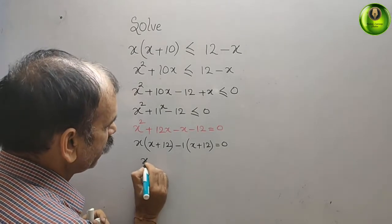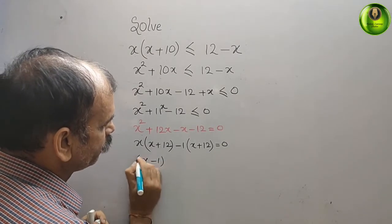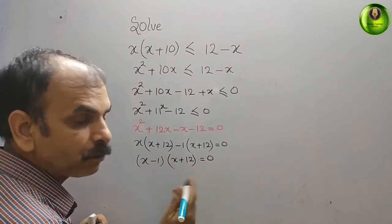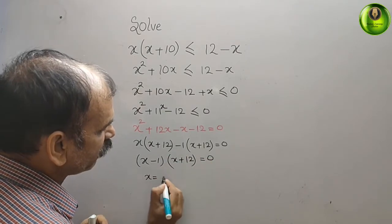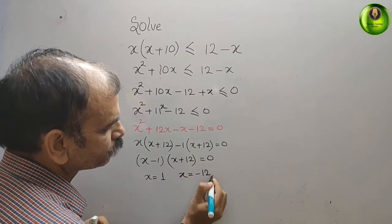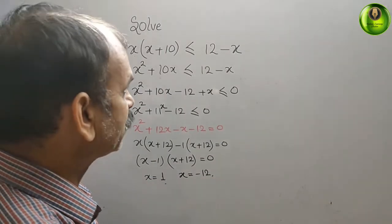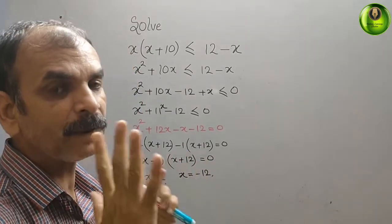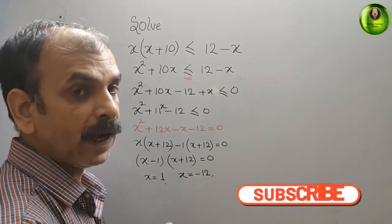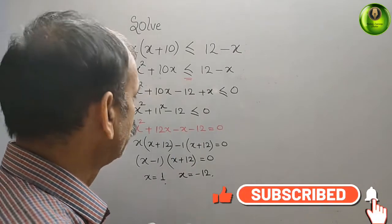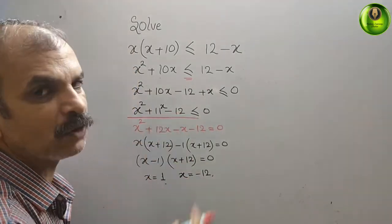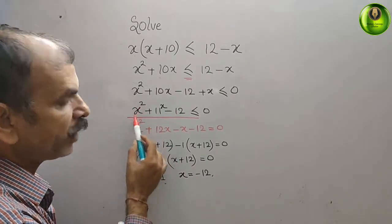The two factors are (x-1) and (x+12) equal to 0, which means x = 1 and x = -12. Now look at the equation x² + 11x - 12: the coefficient of x² is positive.